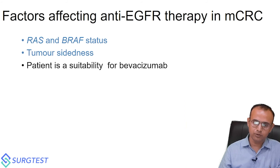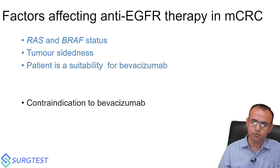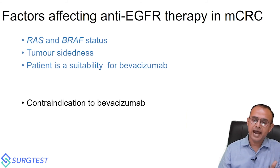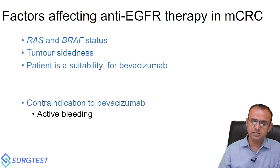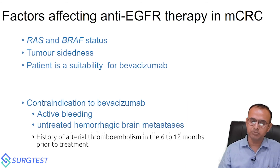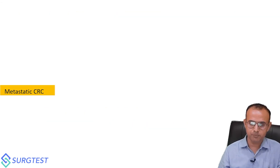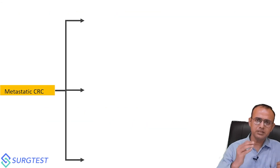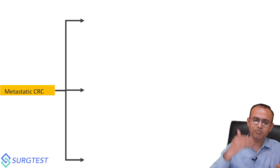Factors affecting anti-EGFR therapy in metastatic colorectal cancer include: RAS and BRAF mutation status, which side of the tumor it is, and patient suitability for bevacizumab. Contraindications to bevacizumab include bleeding tendency, active bleeding, untreated hemorrhagic brain metastasis, and history of arterial thromboembolism within 6 to 12 months prior to treatment.